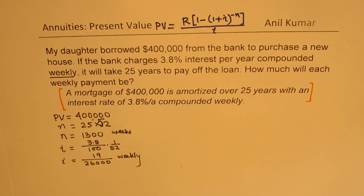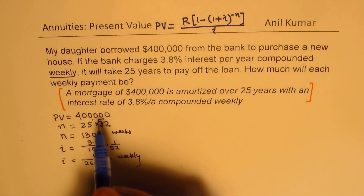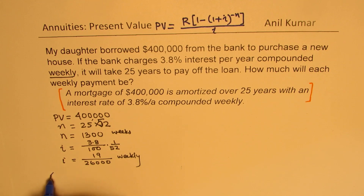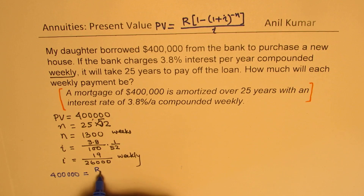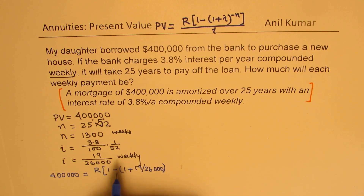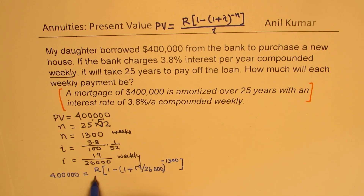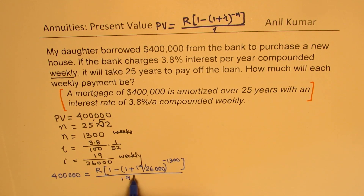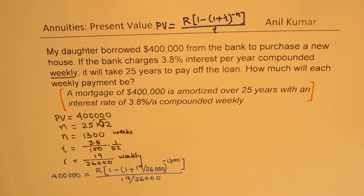We need to find the value of R. Substituting all values, our equation is: 400,000 equals R times [1 minus (1 plus 19/26,000) to the power of minus 1,300], all divided by 19/26,000.